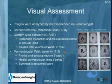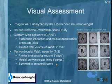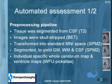For periventricular lesions, you get the severity of the frontal caps, the bands, and the occipital caps, ranging from one to three. We summed all these scores to get a global score of severity for periventricular white matter lesions.